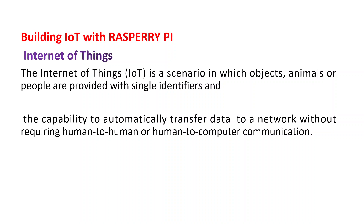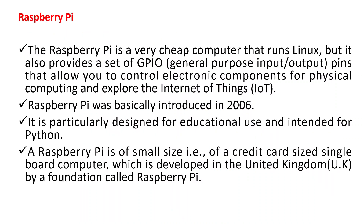IoT is nothing but it is a scenario where each object, animal or people are provided with single identifiers and it has a capability to transfer the data to a network without requiring human-to-human or human-to-computer communication.